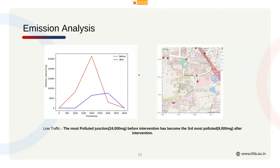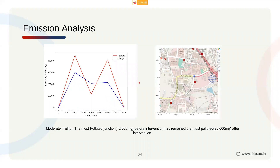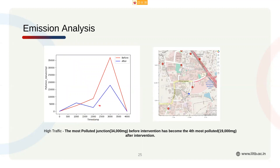Let's look in more detail at one particular junction — the blue junction very close to a university, which is one of the most polluted junctions because a lot of cars use it. This was the most polluted junction with 24,000 mg of pollutants, and after the intervention in the low traffic scenario it became the third most polluted — a very drastic drop in total pollutants. In moderate traffic, there's a smoothing of the curve with fewer pronounced peaks after intervention. In high traffic, the most polluted junction became the fourth most polluted after intervention with a very drastic drop in pollution values.